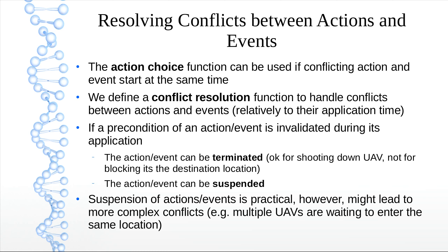For resolving conflicts between durative actions and events, the action choice function can only handle cases where the action and event start at the same time. If they are already being executed, we still need to resolve the conflict. We introduce a conflict resolution function to decide, in a similar fashion to the action choice function, whether an action or event will prevail in a given timestamp. When a precondition of an action or event becomes invalidated during execution, one option is to simply terminate it, which is appropriate for shooting down a UAV.